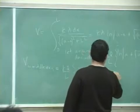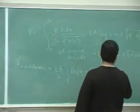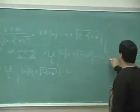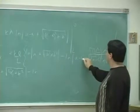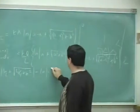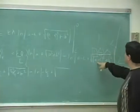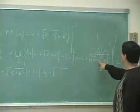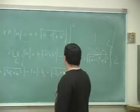squared over 4 plus b squared minus ln, and then if you put here l over 2 minus l over 2, l over 2 minus l, you're going to get negative l over 2 plus square root of, and this one is going to be l over 2 minus l squared over 4 plus b squared.